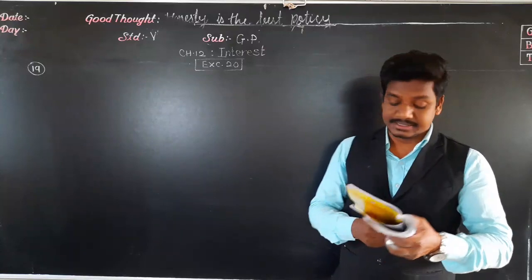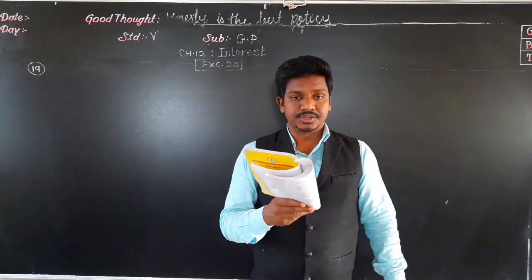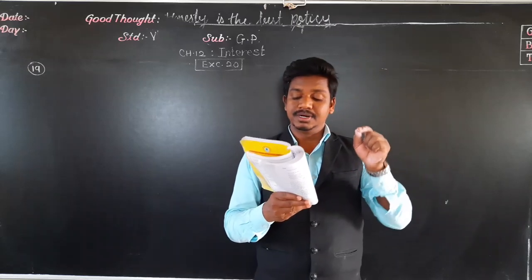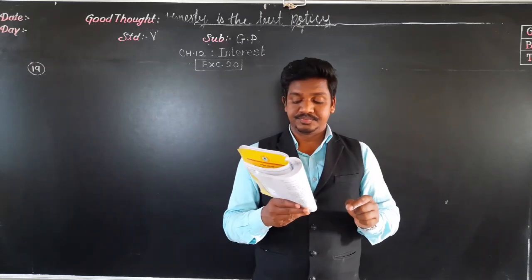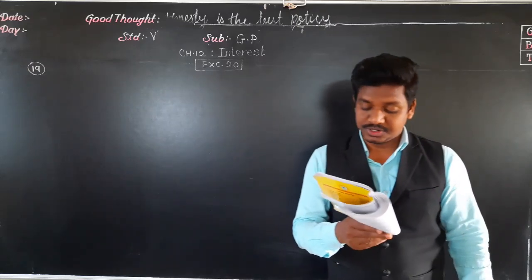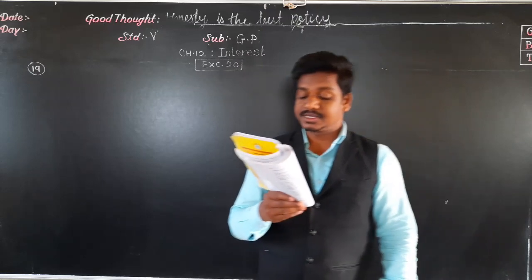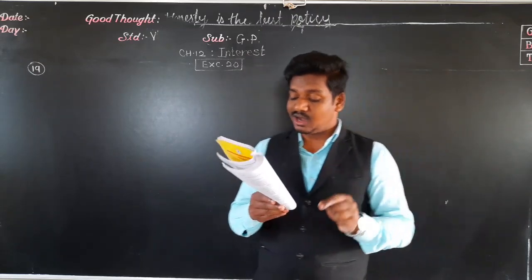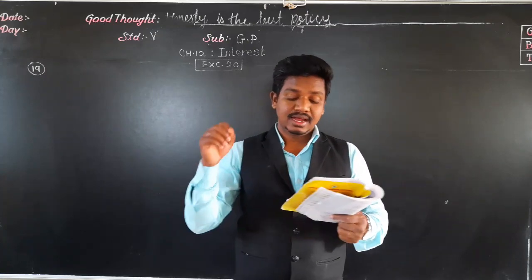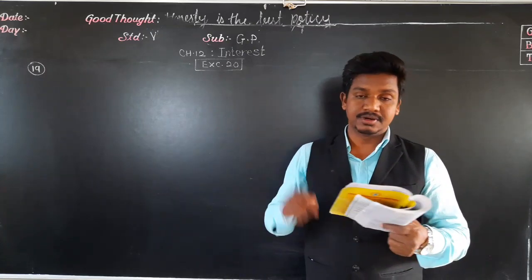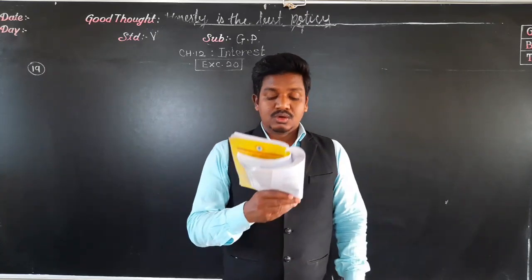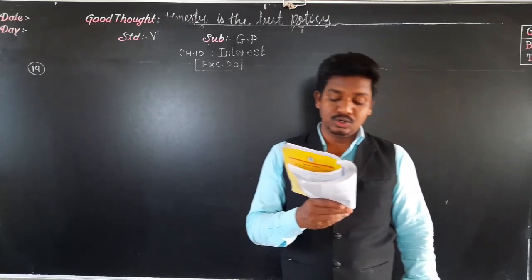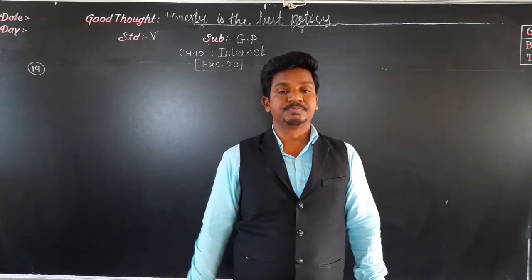Pause this video and write these examples in your notebook. Now, example number 9: Rahul borrowed from a money lender rupees 2400 at 7% rate.